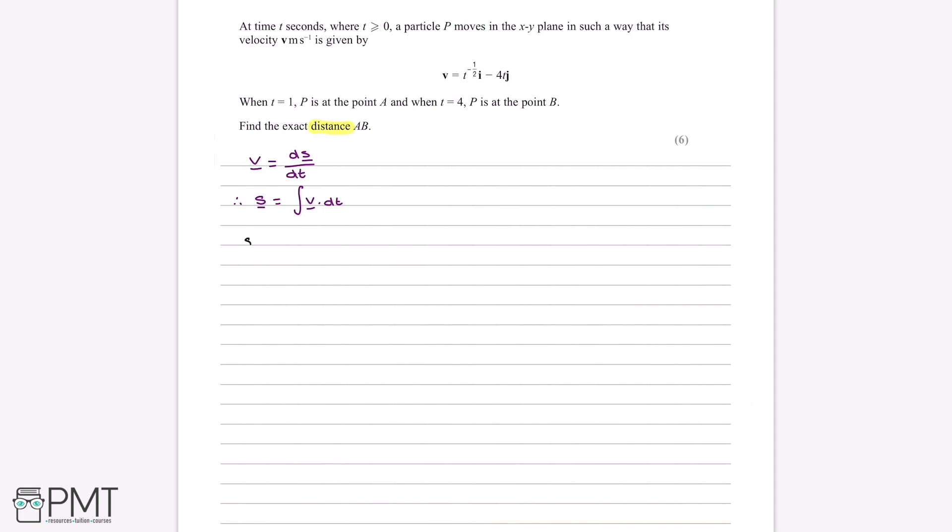So, if displacement is equal to the integral of velocity, and we know that in this case, velocity is t to the power of minus a half i minus 4tj by dt, then we can solve this.